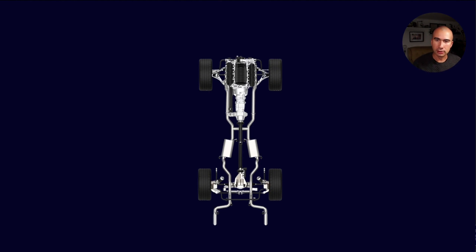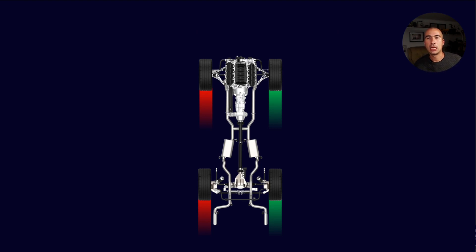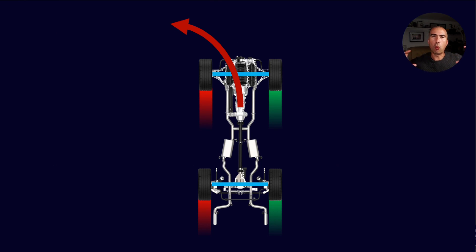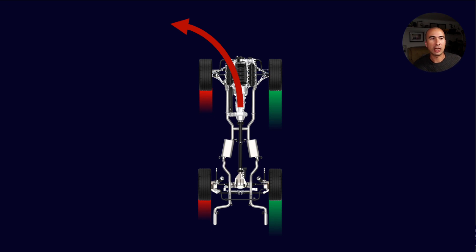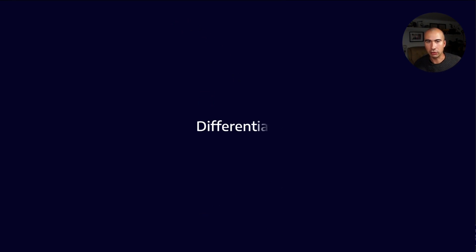Let's look at a car and assume that the wheel rotational speed is indicated by these tyre marks. If I wanted to turn left but the wheels were fixed together by a fixed shaft, one of the wheels is going to slip. In order to turn, what I really want is for the inside wheel to have a much lower rotational speed than the outside wheel. To overcome that, we have built things called differentials.